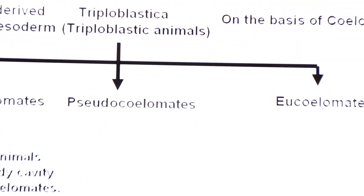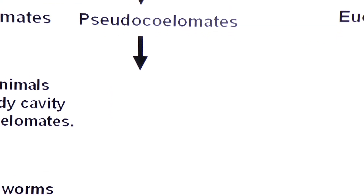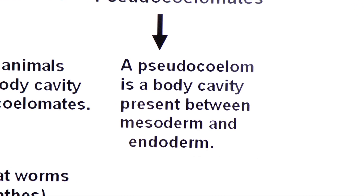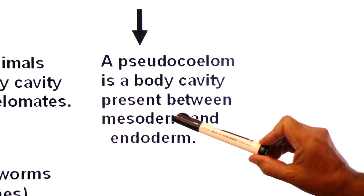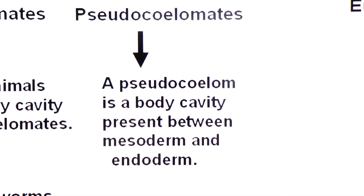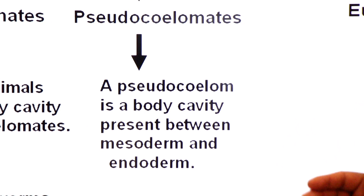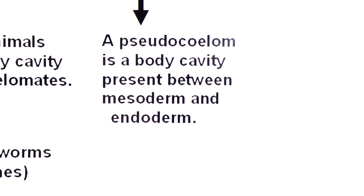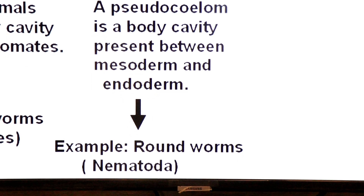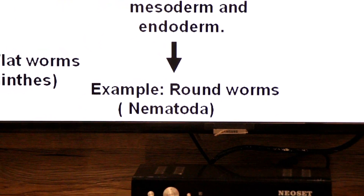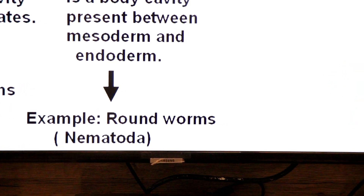Number two: Pseudocoelomates. 'Pseudo' means false and 'coelom' means body cavity — having a false body cavity. A pseudocoelom is a body cavity present between mesoderm and endoderm. Only one phylum is included in Pseudocoelomates: roundworms, Phylum Nematoda.